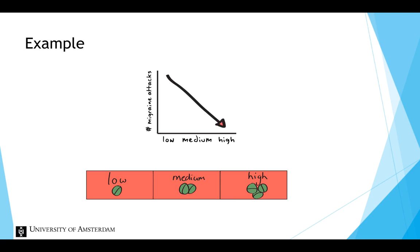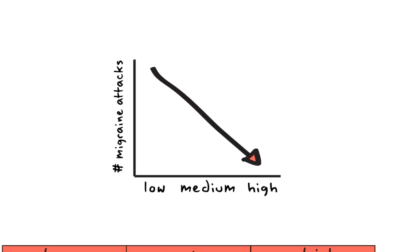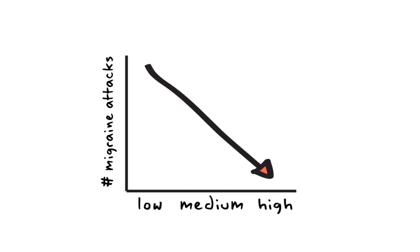For example, does a higher dosage of the new drug reduce the number of migraine attacks? The line in this graph simply reflects the average migraine attacks among the participants with the same condition of dosage. So these dots represent the averages per dosage and are being connected to visualize the effect of dosage on migraine attacks, to see if the average migraine attacks decreases or increases, or stays the same across conditions.